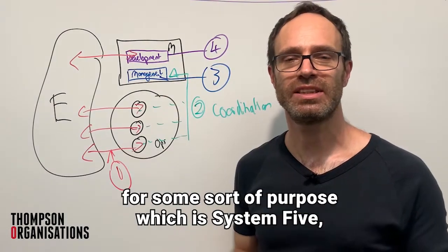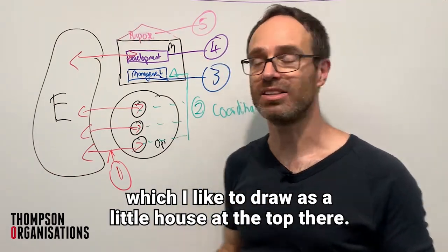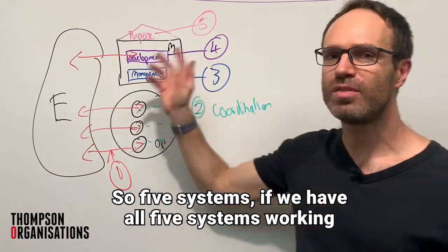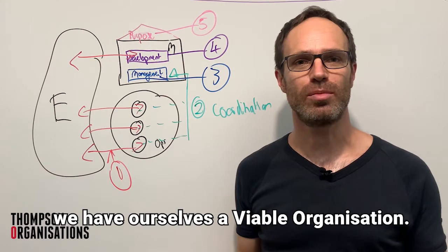Finally, all of this exists for some sort of purpose, which is System 5, which I like to draw as a little house at the top there. So 5 systems, if we have all 5 systems working, we have ourselves a viable organisation.